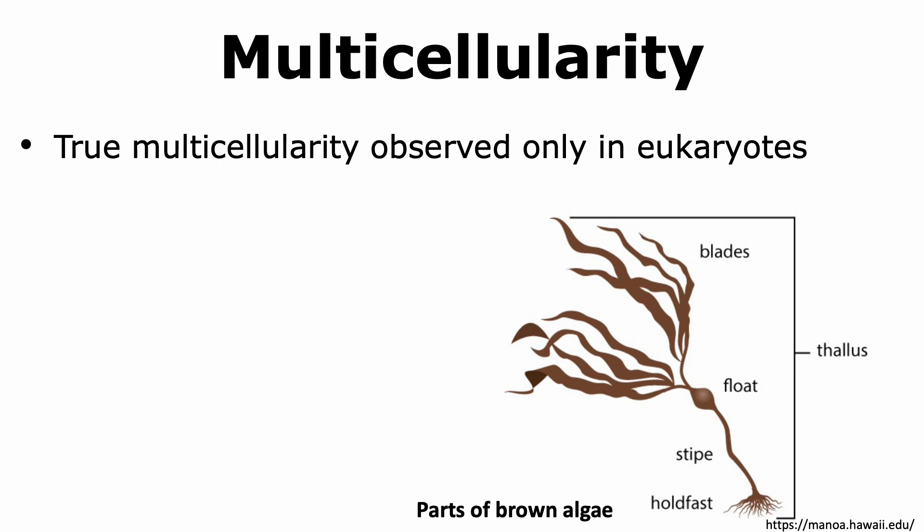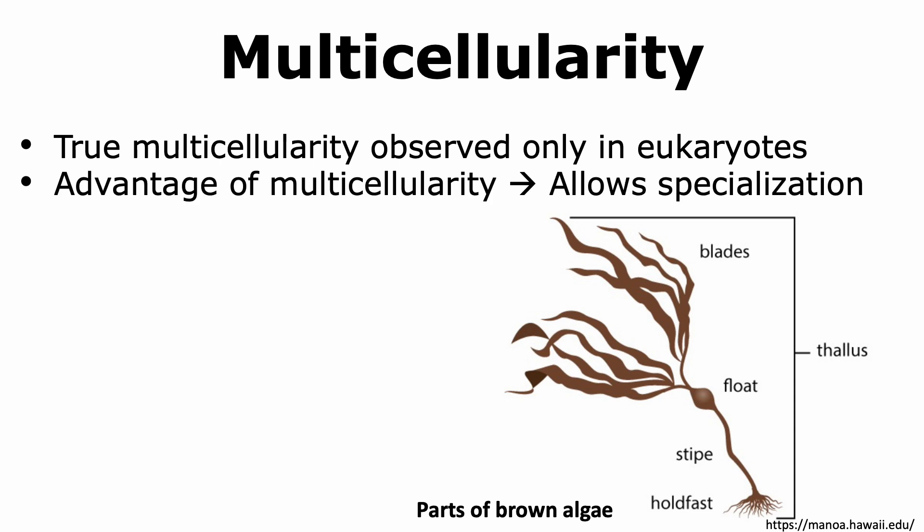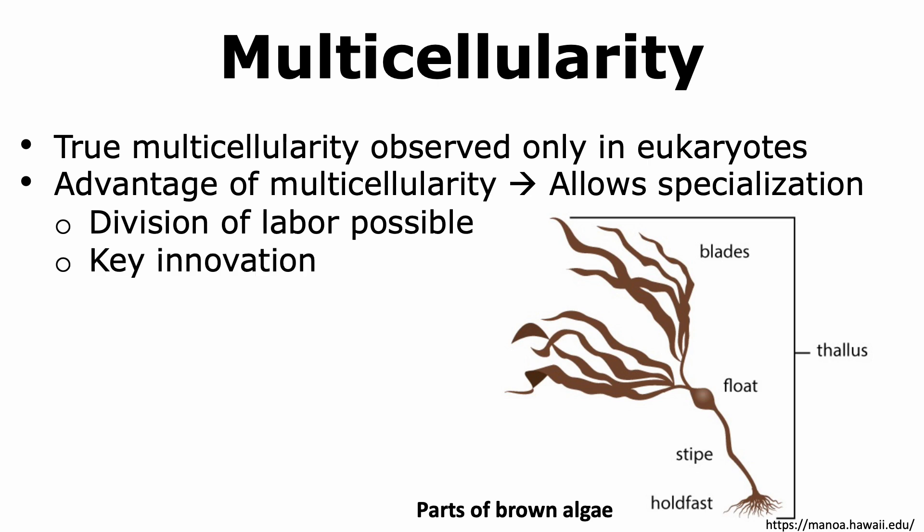Even though we can see different prokaryotic organisms living together in groups, they do not display true multicellularity. The advantage of multicellularity is that it allows specialized functions to evolve. Division of labor is possible, and this allows organisms to become more complex. Hence, the ability to become multicellular is a key innovation that evolved in eukaryotes and was evolutionarily favored, which is why we are able to see a wide variety of multicellular organisms in the environment.